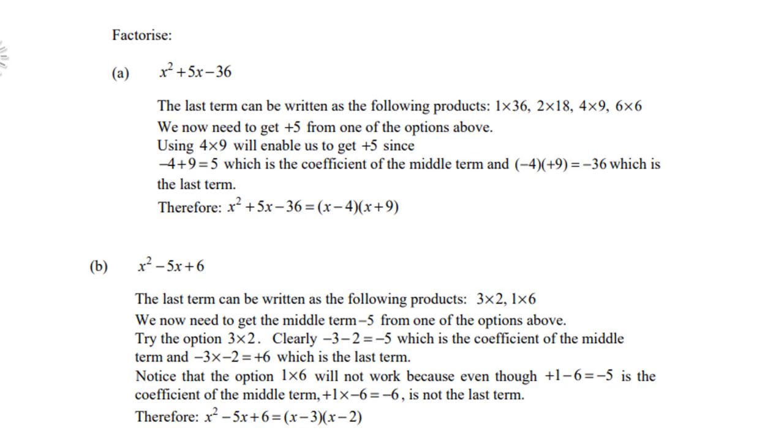Let's look at the first example. So the last term can be written as the following products: either 1 times 36, 2 times 18, 4 times 9, or 6 times 6. We now need to get a positive 5 from one of the options above.